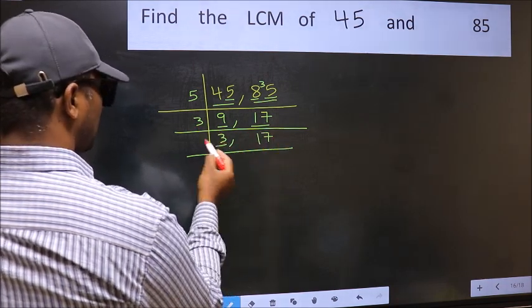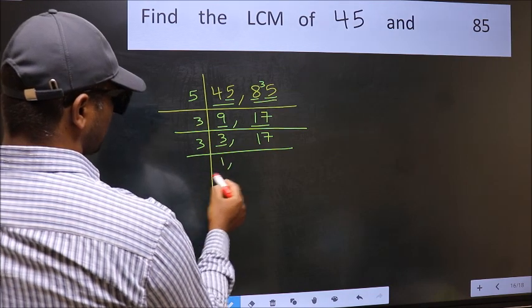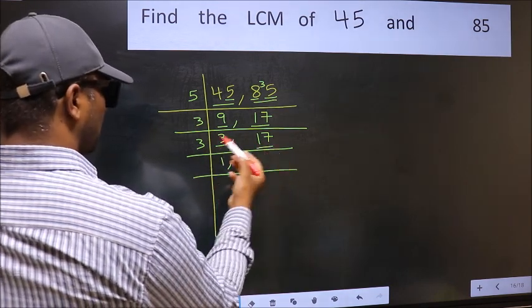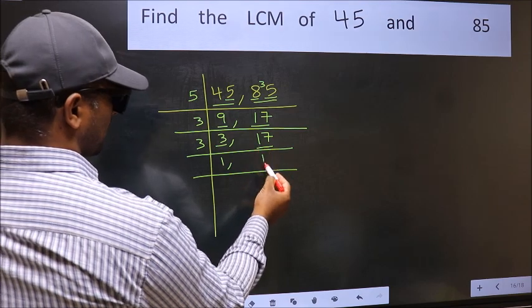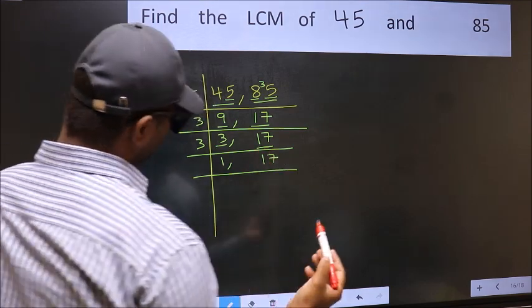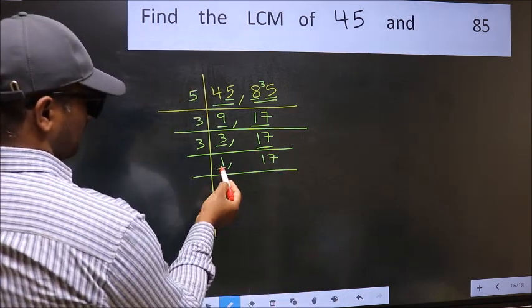Now here we have 3. 3 is a prime number, so 3 times 1 is 3. The other number 17 is not divisible by 3, so you write it down as it is. Now we got 1 here.